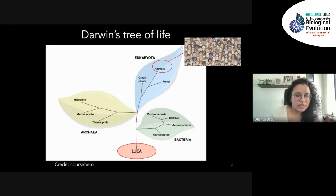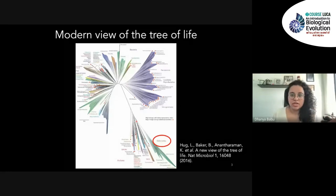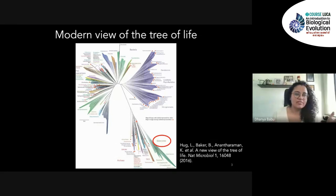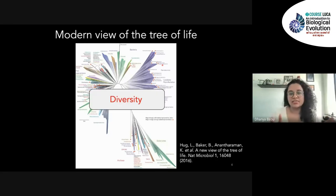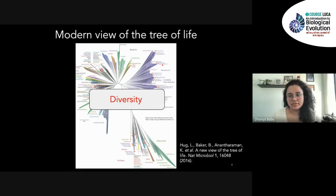But now with new DNA, RNA, and protein similarities that scientists can find, this tree of life has been expanded. This is a very complicated view, but what I want you to take away is the diversity — the fact that there are millions of species and life as we know it is very diverse.